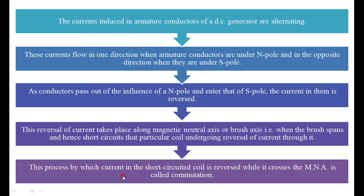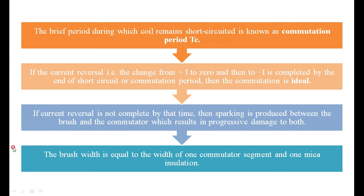The unidirectional current is obtained in the load, however the current induced in the armature is alternating, changing its direction every half cycle. The brief period during which the coil comes into contact with the brush where the reversal takes place is called the commutation period. When a particular coil comes under the commutation process while touching the brush axis or the magnetic neutral axis for a small short period of time, that period is called the commutation period, represented by Tc.